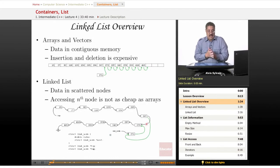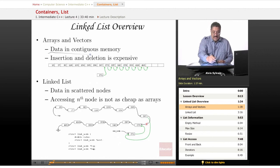A quick overview here. We've seen arrays and vectors. The data is kept in contiguous memory. Here's a nice picture with some numbers. Insertion and deletion can be expensive. You see, we have a 271 we want to put in this particular location to keep it in order.